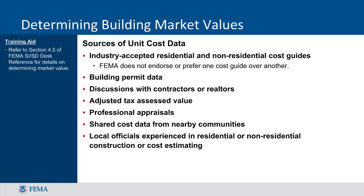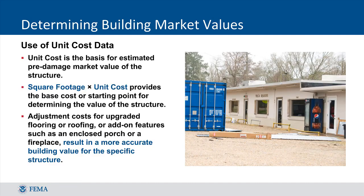Unit cost data can come from many different sources including industry-accepted cost guides, building permit data, discussions with contractors or realtors, adjusted tax assessed value, professional appraisals, shared cost data from nearby communities, or local officials experienced in construction and cost estimating. The unit cost data is critical for determining the pre-damaged market value and provides credibility for structure owners. Pre-damaged market values that are unrealistic for the area being inspected can undermine the credibility of the substantial damage determinations for owners, other local officials, and potentially an appeals board or judge.